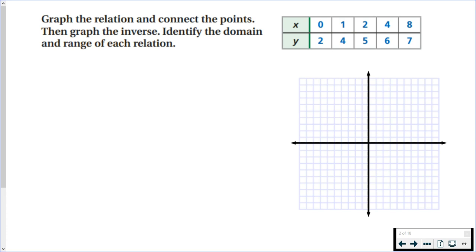We're given five points: 0, 2, 1, 4, etc. All I'm going to do is put those on the graph and connect them. That's what you would get.